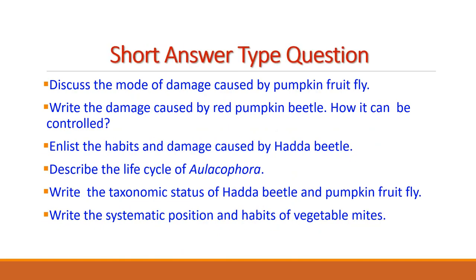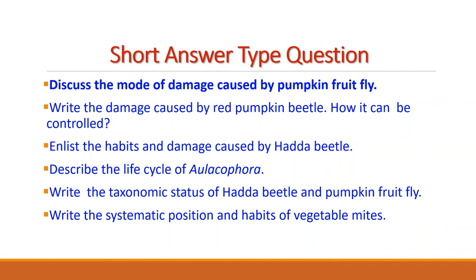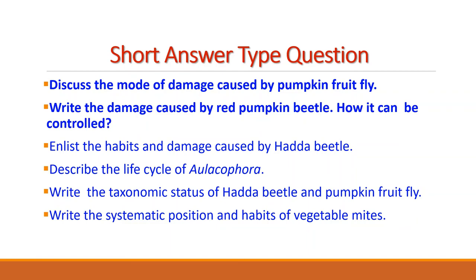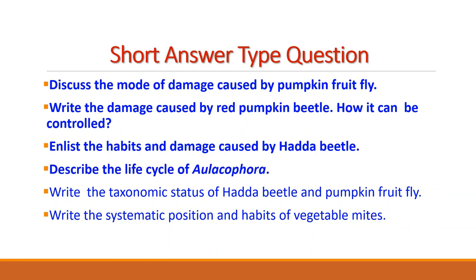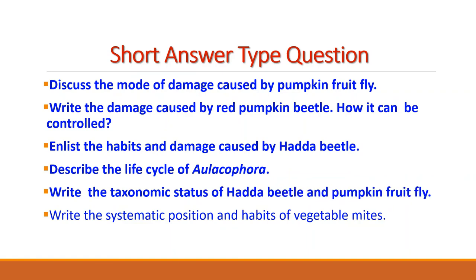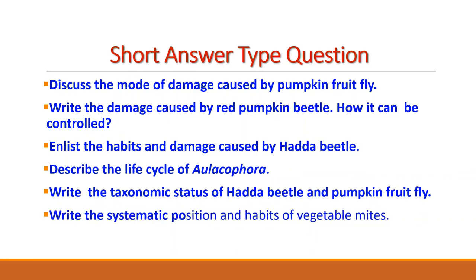Short answer type questions: Discuss the mode of damage caused by pumpkin fruit fly. Write the damage caused by red pumpkin beetle and how it can be controlled. Enlist the habits and the damage caused by Hadda beetle. Describe the life cycle of Aulacophora. Write the taxonomic status of Hadda beetle and pumpkin fruit fly. Write the systematic position and habits of vegetable mites. Do all the questions, make a PDF and send it to the concerned teacher in your college. This will help you in examination.